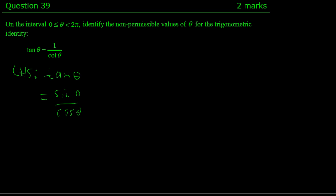So if tan is being written as sine over cosine, then our non-permissible value is the bottom: cosine of θ cannot equal 0.